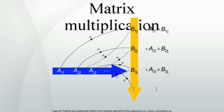Transpose: where T denotes the transpose, the interchange of row i with column i in a matrix. This identity holds for any matrices over a commutative ring, but not for all rings in general. Note that A and B are reversed. Complex conjugate: if A and B have complex entries, where T denotes the complex conjugate of a matrix. Conjugate transpose: if A and B have complex entries, where plus-T denotes the conjugate transpose of a matrix, complex conjugate and transposed. Traces: the trace of a product AB is independent of the order of A and B.